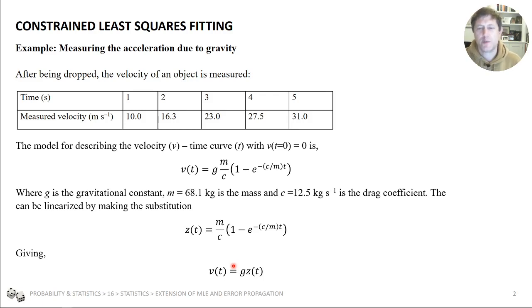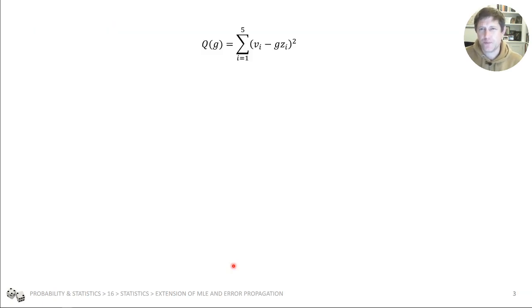But what we want to do is we want to fit our value of g to that data. Now, with the method that we showed in the previous mini-lecture, we can do that. And we can do it starting at this point where we have our function q, which we're trying to minimize. We got to that point in the previous lecture, so the derivation up to that point is the same.